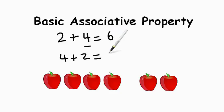4 plus 2 is 6 and 2 plus 4 is 6. It's the same amount. It doesn't matter. And that's truly what the basic associative property means. No matter which way they are in order, it still comes up with the same answer.